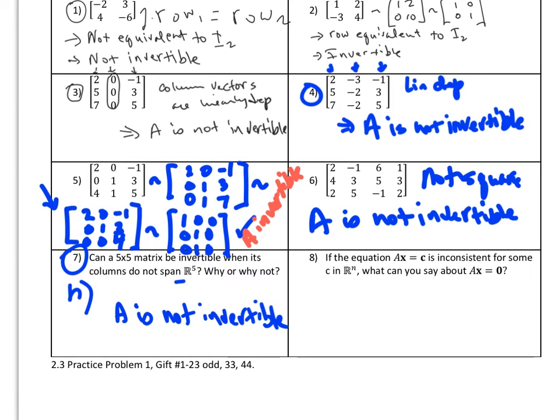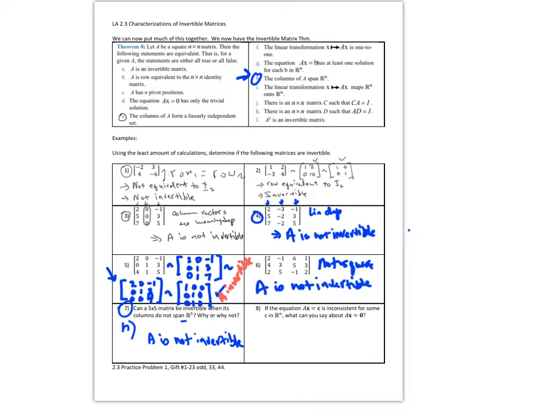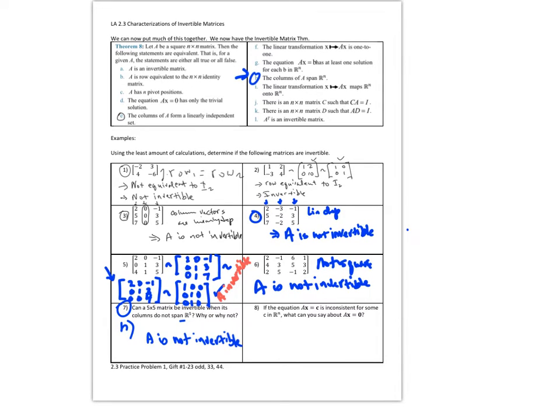Now number eight. If the equation Ax = C is inconsistent for some C in Rⁿ, what can you say about Ax = 0? We have to look above. Condition G says Ax = B has to have at least one solution for each B in Rⁿ. We're told it's inconsistent, so this is not true. If this is not true, then Ax = 0 has more than the trivial solution.